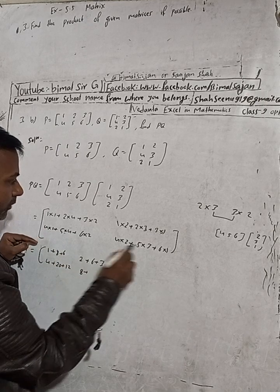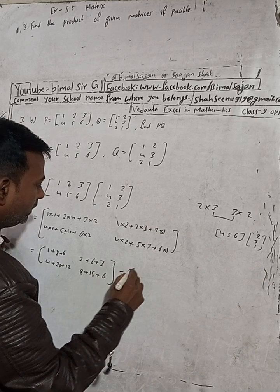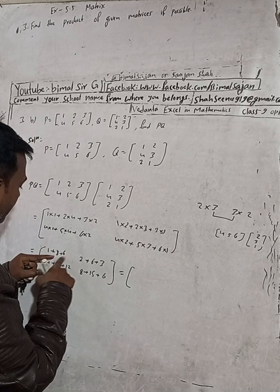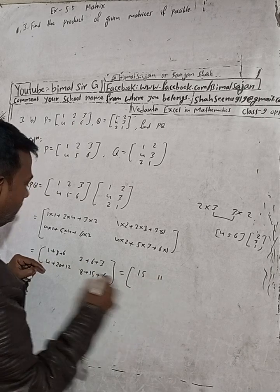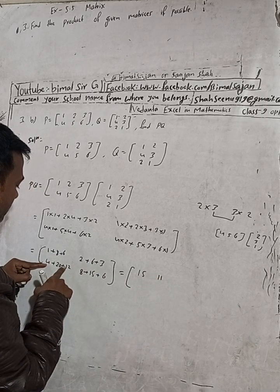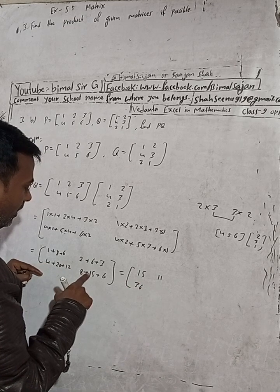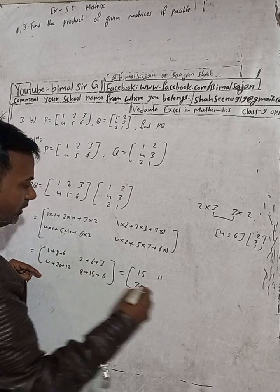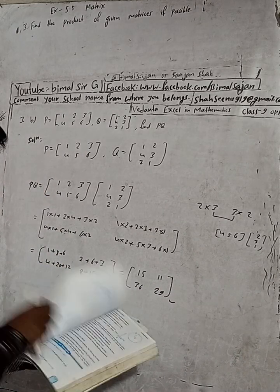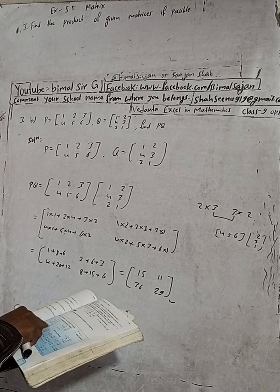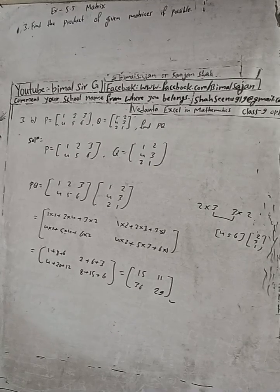For the second row: 4+20+12 equals 36, and 8+15+6 equals 29. So the final answer for PQ is the matrix 15, 11, 36, 29. This is the correct answer for question 3B.